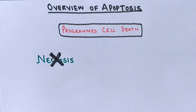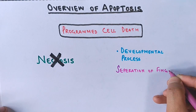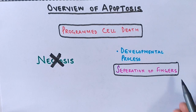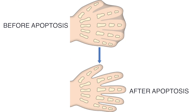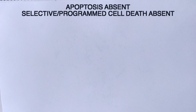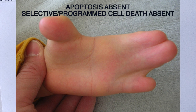Apoptosis is a part of an organism's life cycle, such as in developmental processes — for example, the separation of fingers during embryonic development. Take a look at this picture showing before and after apoptosis in the separation of fingers, or digits. If apoptosis ceases to exist in any person, the result will be a webbed hand, and this condition is called syndactyly.